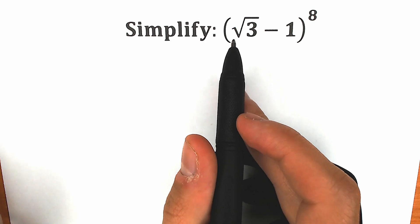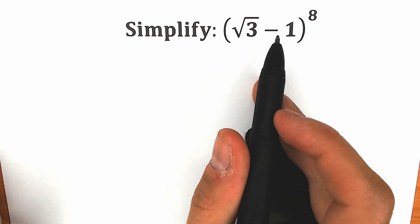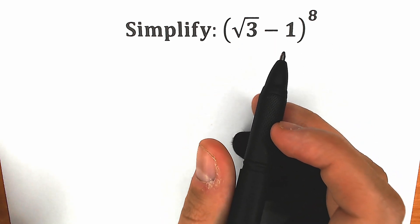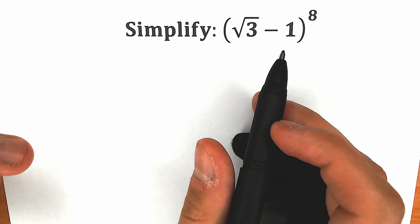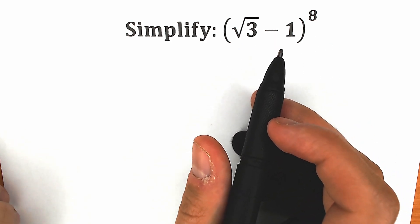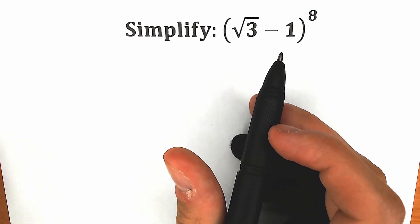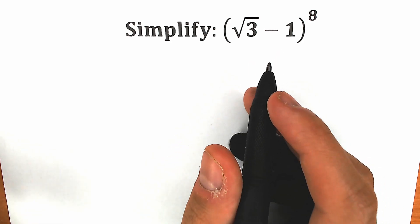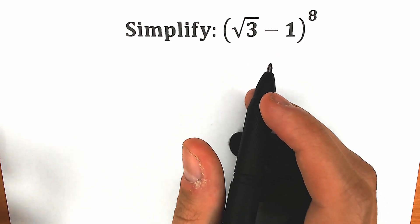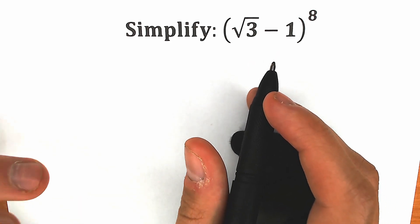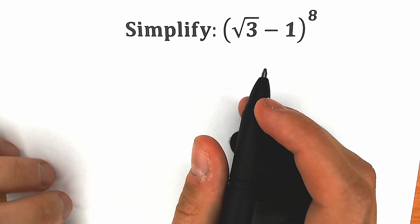We need to evaluate this square root of 3 minus 1 to the 8th power. There are a lot of approaches — you can easily pause the video, write your solution down into the comment section, and we will check our answers here in just a few minutes.